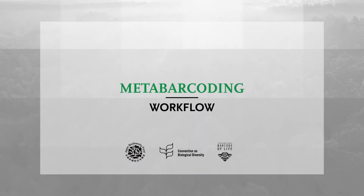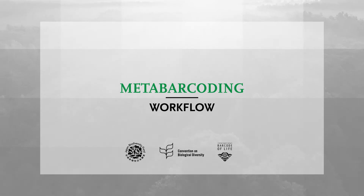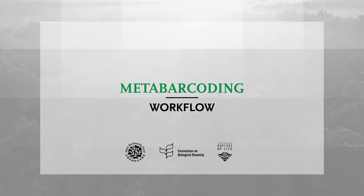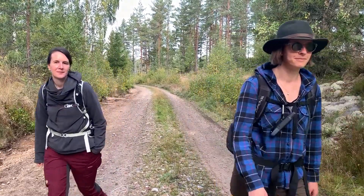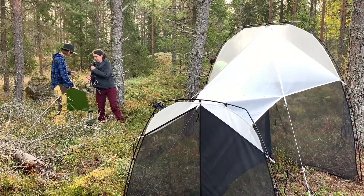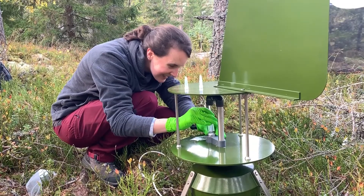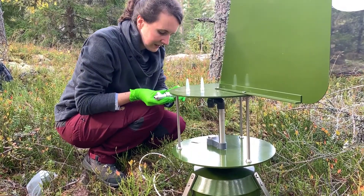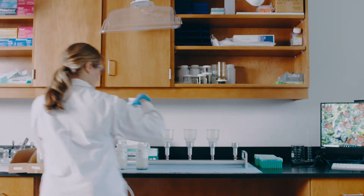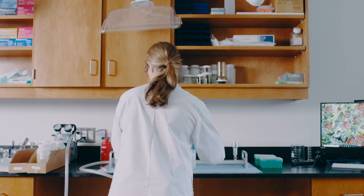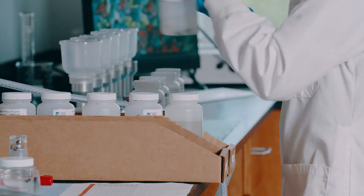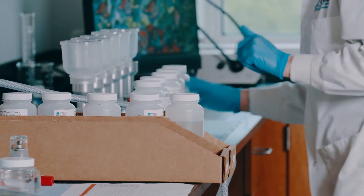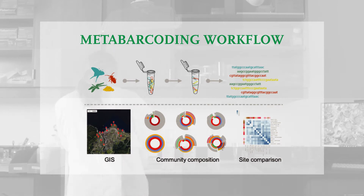This video will present one workflow for metabarcoding bulk insect samples collected with malaise traps. This process begins in the field by collecting small organisms or even just samples of water, soil, or aquatic sediments. Back in the lab, the samples are processed in bulk without sorting them first. Different labs might use different metabarcoding protocols than shown here, but the steps are largely the same.